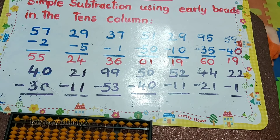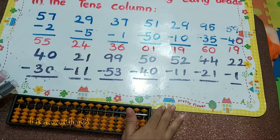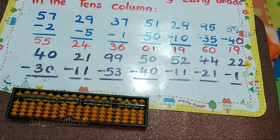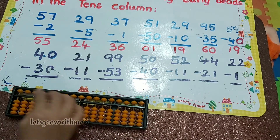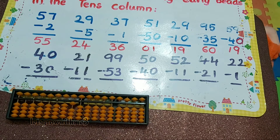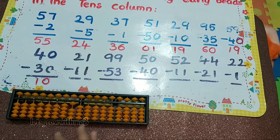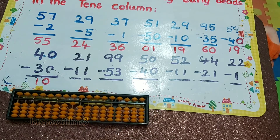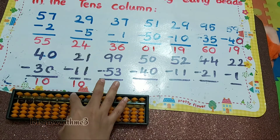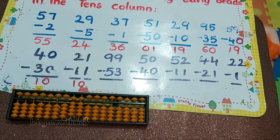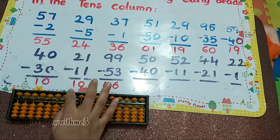Are you able to see my work? I'll bring it up. 40 minus 30, so the answer is 10. Next one: 21 minus 11, so the answer is 10. Next one: 99 minus 53, so the answer is 46.